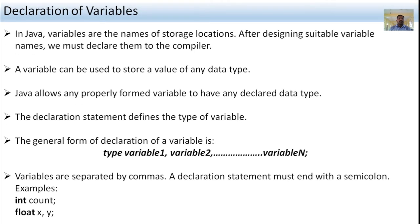The declaration of variables — how to declare variables in a program. In Java, variables are the names of storage locations. After designing a suitable variable name, we must declare them to the compiler.